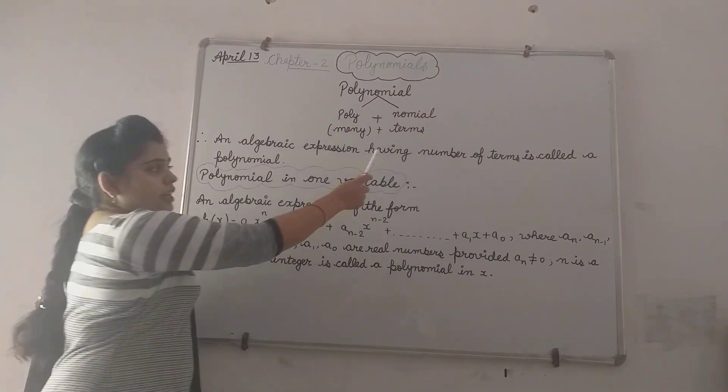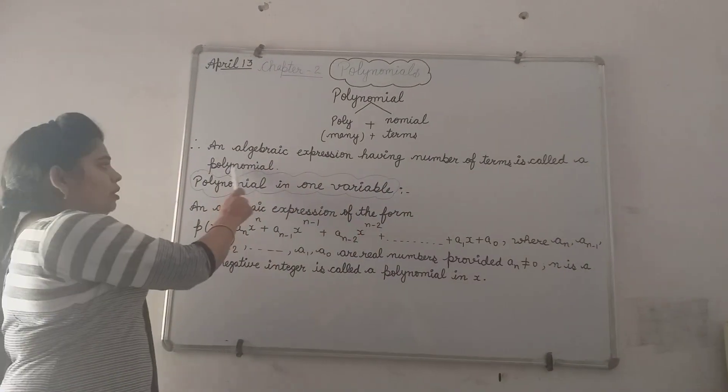An algebraic expression having number of terms is called a polynomial.